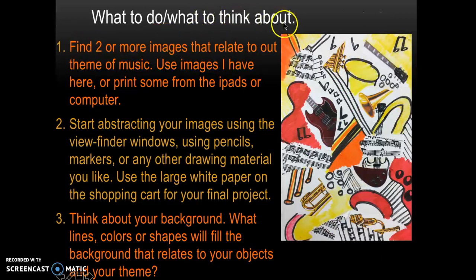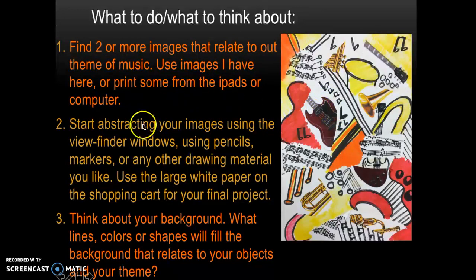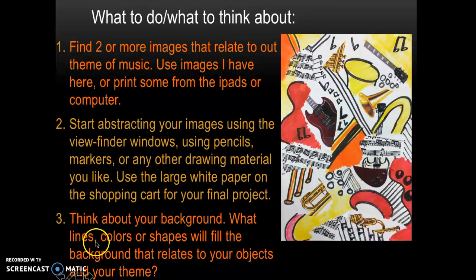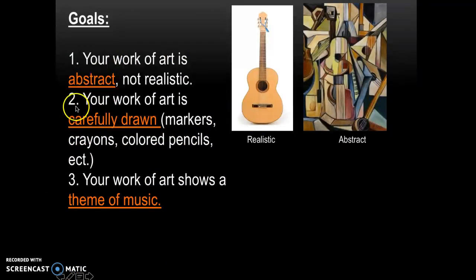Let's look at a few more examples. What do you see in these works of art? Pick out objects you recognize, things happening in the background, and describe the colors, lines, and shapes. Here's what you're going to start doing today: find two or more images that relate to the theme of music. Your goals are to make a work of art that is abstract — not realistic. If you're abstracting a guitar, it really should look very different from a guitar. Your work of art should be carefully drawn and clearly show the theme of music.